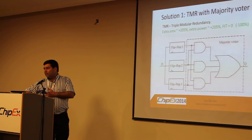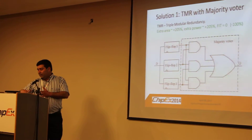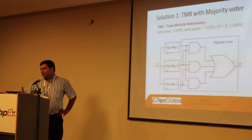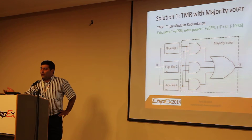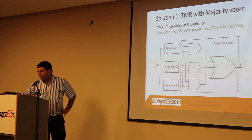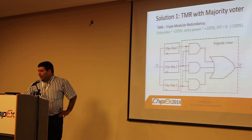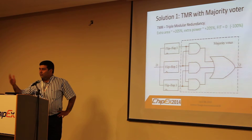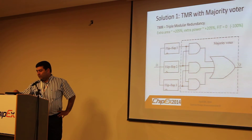Since in most cases the probabilities involve a single event upset and not multiple upsets, only one flop will get hit. We have a voter that follows, which votes out the flipped value — two will win over one. This actually solves the problem almost 100%, lowering the FIT rate close to zero. But it takes 200% more silicon and 200% more power per flop.